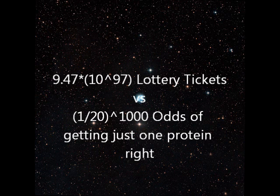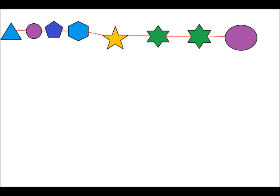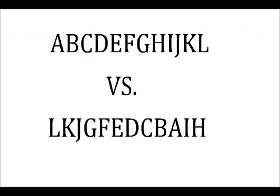Experiments that have shown that amino acids could have formed naturally are not relevant, since the point of these calculations is not whether amino acids could form or whether or not they could form strings. Instead, these calculations are on the odds of the amino acids of that string being in the correct order.